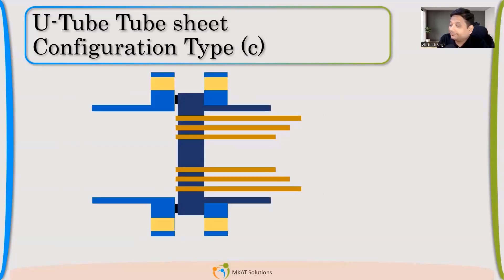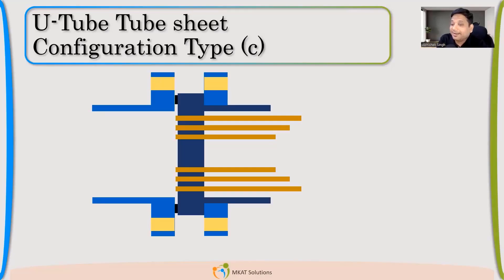Now C — it is still integral with shell, but what is the difference between B and C? In B, the tube sheet was extended as a flange. In C, it is not extended — it is a lap joint. It's not sandwich type. It may be a slip-type. So this is Type C: tube sheet integral with shell but not extended as a flange, using a lap joint instead.